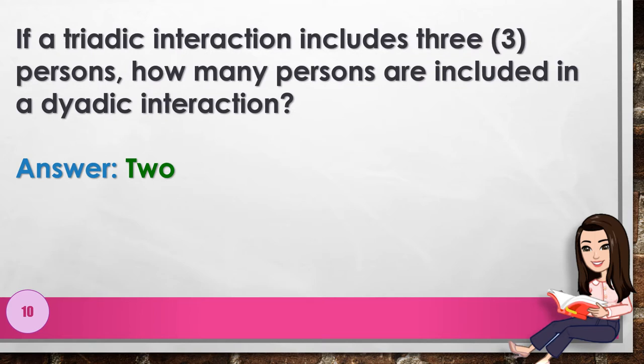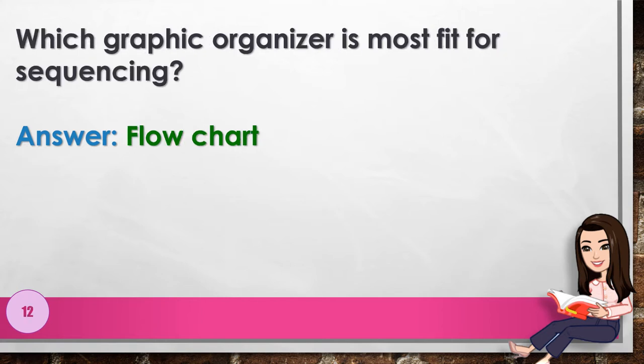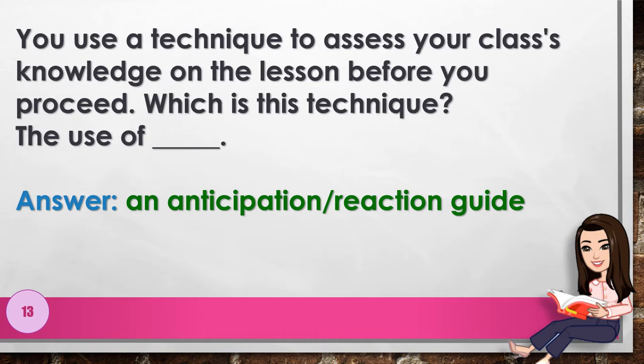Number 9: If you want to generate as many ideas as you want, which one should you use? Answer: panel discussion. Number 10: If a triadic interaction includes three persons, how many persons are included in a dyadic interaction? Answer: two. Number 11: For effective comparison, which one can you use? Answer: metaphor.